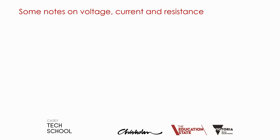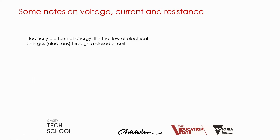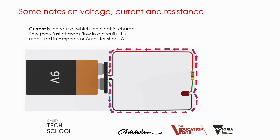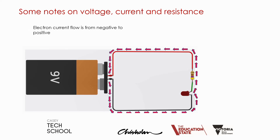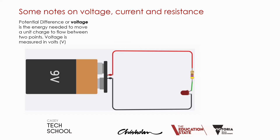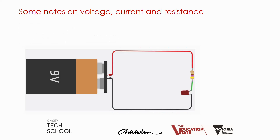At this point it's good to see what's happening electrically in this circuit. Electricity is a form of energy and it's the flow of negative charges called electrons through a closed circuit. Current is really the rate at which these electric charges flow, and electron current flow is from negative to positive. Electrically it's often useful to look at it the other way, known as conventional current flow from positive to negative. Voltage is the energy needed to move a unit charge between two points, and is measured in volts. Resistance is the opposition to the flow of electric charges and is measured in ohms.